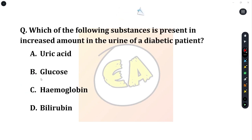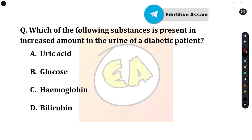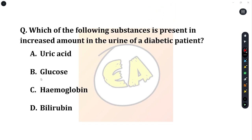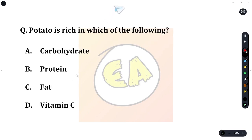Next question: which of the following substances is present in increased amount in the urine of a diabetic patient? Option A: uric acid. Option B: glucose. Option C: hemoglobin. Option D: bilirubin. The correct answer is glucose — in a diabetic patient, glucose is found in excess in the urine.